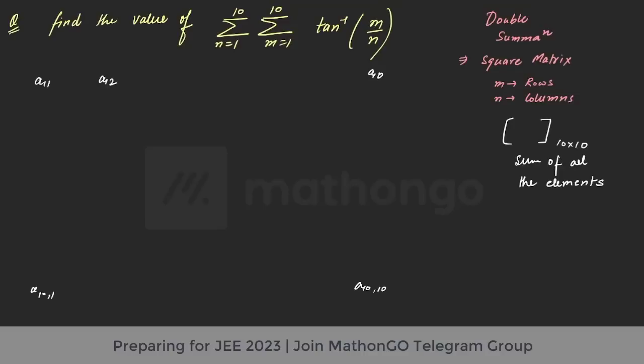So what will be the first element, that means putting m as 1, that will be tan inverse 1. To understand better, those students who are not comfortable with the double summation sign, what you should do? You should put m equal to 1 first and do the summation according to n. So this will be tan inverse 1/2, this will be tan inverse 1/3 and this will go till tan inverse 1/10.